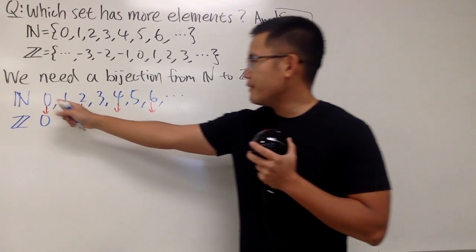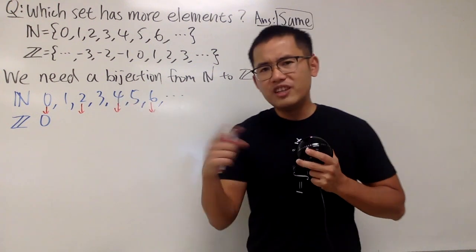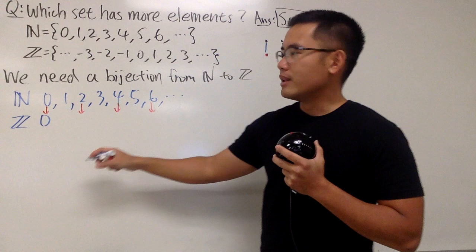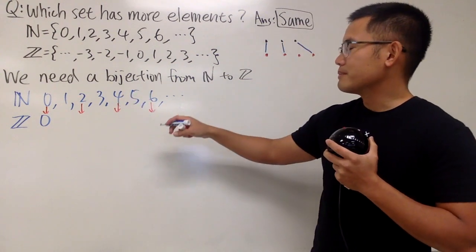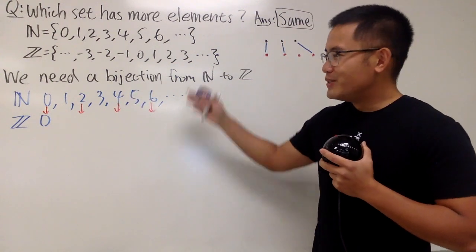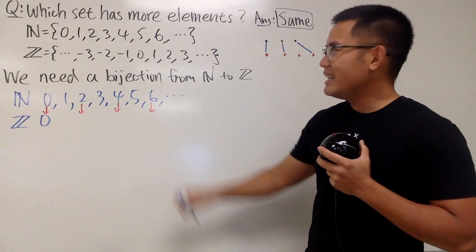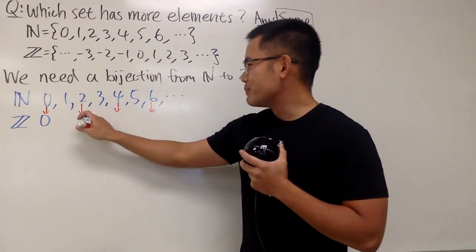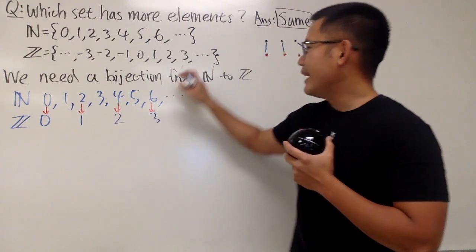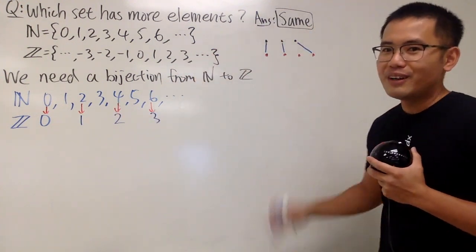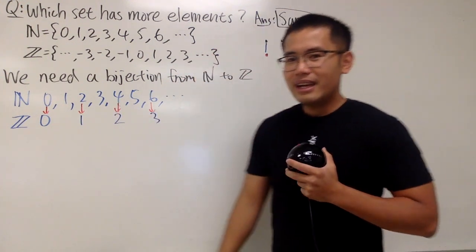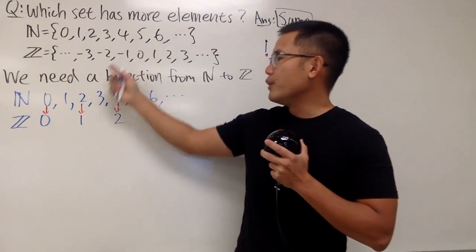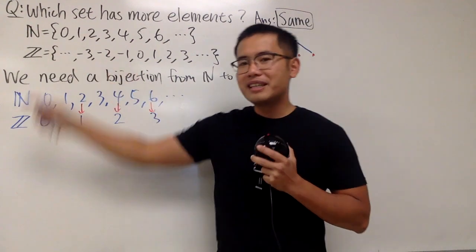if I have all the even numbers right here, if we divide it by 2, what will happen? Well, 2 divided by 2 will be 1. 4 divided by 2 will be 2. 6 divided by 2 will be 3. And wouldn't that just be the right hand side right here? Yes. So I can of course put down 1, 2, 3. And of course, this right here will keep on going forever. That's good. So now we have put down all these numbers right here already. Now we just have to fill in the gap with the negative integers.